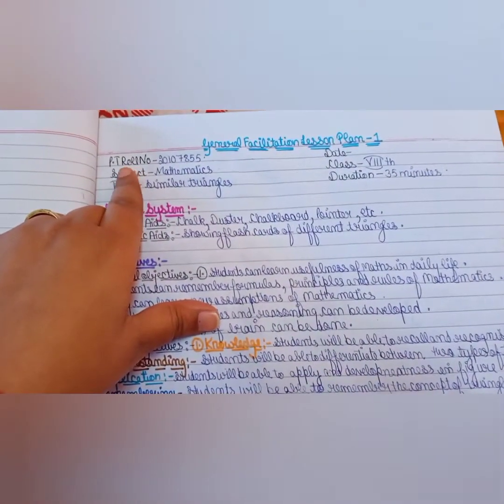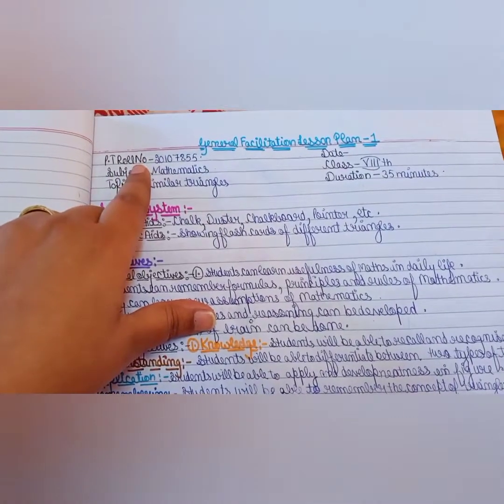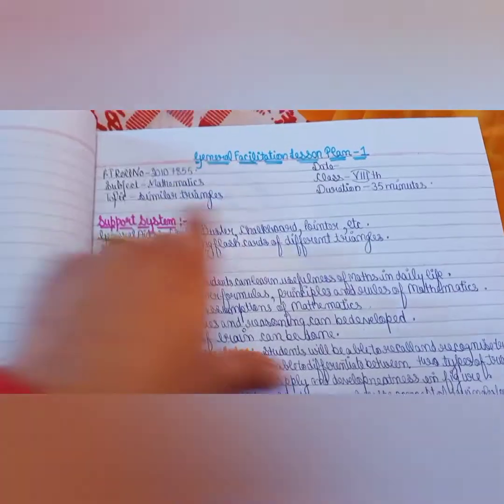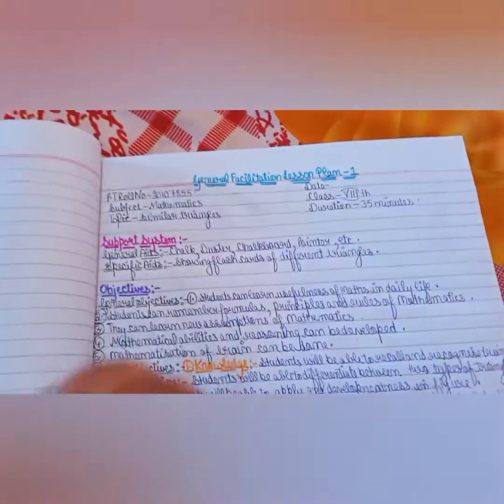After that, first you have to write PT row number, which is your row number which you are teaching, then subject, then topic, date, class and duration.